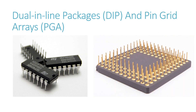Dual in-line packages (DIPs) and pin grid arrays (PGAs) are through-hole packages. In DIPs, the I/Os or the pins are distributed along the sides of the package. To achieve higher I/O connections, PGAs are used, where the pins are distributed in an area array fashion underneath the package surface.